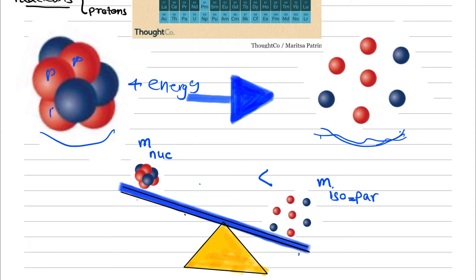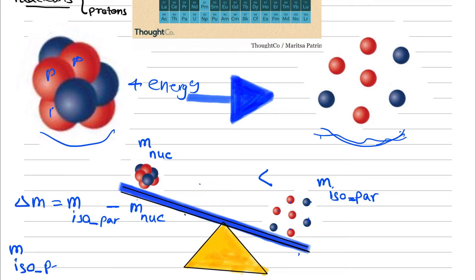We have here a mass difference, which is called mass defect, shown by delta M, which is mass of isolated particles minus mass of the nucleus. In this example, we have four protons and three neutrons. Therefore, the mass of isolated particles is equal to 4 multiplied by the mass of protons plus 3 multiplied by the mass of neutrons.